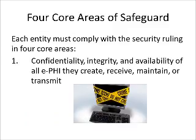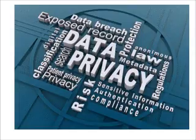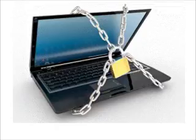There are four areas of safeguard that must be addressed. Each entity must comply with the security rule in four core areas. Number one: confidentiality, integrity, and availability of all electronic protected health information they create, receive, maintain, or transmit. While the Privacy Rule sets the standards for disclosure and usage of health information, the Security Rule covers the move to electronic health information.